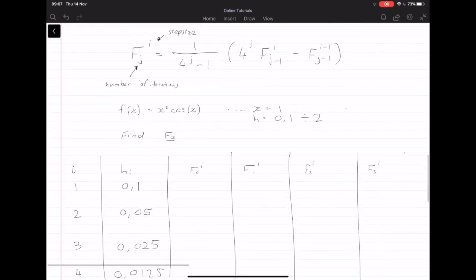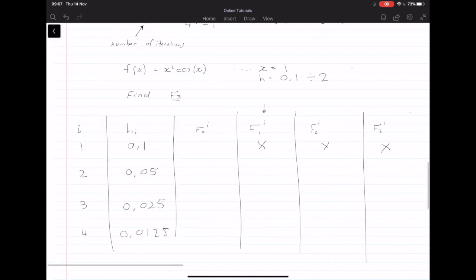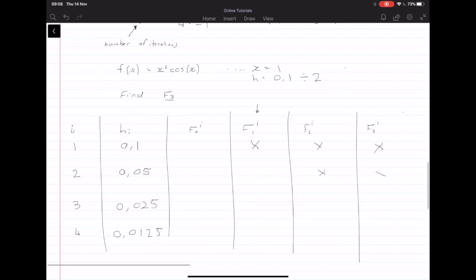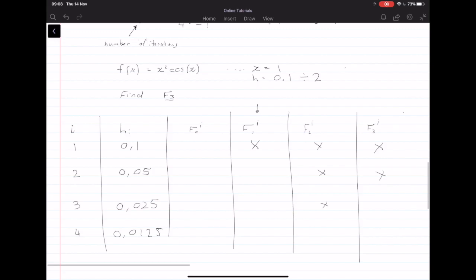And then what we also have to know is using these tables, this first row, unfortunately, it doesn't count as an iteration. But from the first, from this row onwards, we have iterations. And how the table works is we never fill in these values right here. So we have a nice triangle forming.